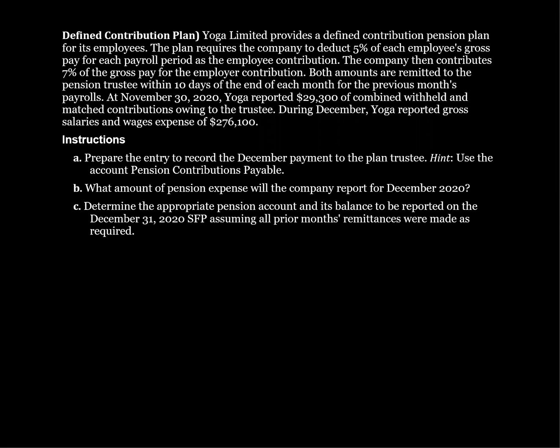Both amounts are remitted to the pension trustee within 10 days at the end of each month for the previous month's payrolls. As of November 30, 2020, Yoga reported $29,300 of combined withheld and matched contributions owing to the trustee. During December, Yoga reported gross salaries and wages expense of $276,100.